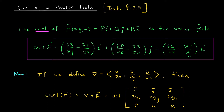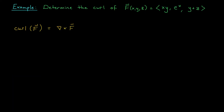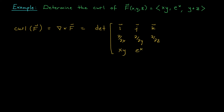Let's try an example so you see how this works. For our first example, we're going to determine the curl of this vector field: f(x, y, z) = (xy, e^x, y+z). All we have to remember is that the curl is the cross product of our derivative operator and our vector field. So we think of this as the determinant of the 3 by 3 matrix with i, j, k in the top row; partial by partial x, partial by partial y, partial by partial z in the second row; and our three component functions x·y, e^x, y+z in the third row.